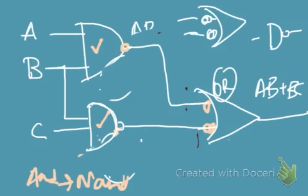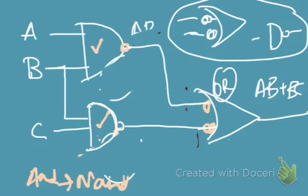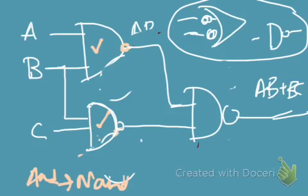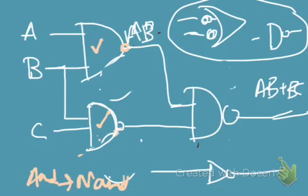Now we have two NAND gates and one bubbled OR gate. We know that a bubbled OR gate is nothing but a NAND gate, so we replace the bubbled OR gate with a NAND gate. If you write the truth table before and after replacing, you will get the same output. Now all the gates in the circuit are NAND gates, so NAND gate realization has been achieved.